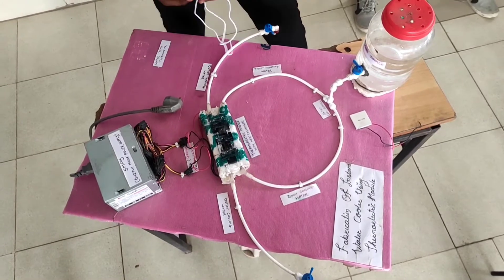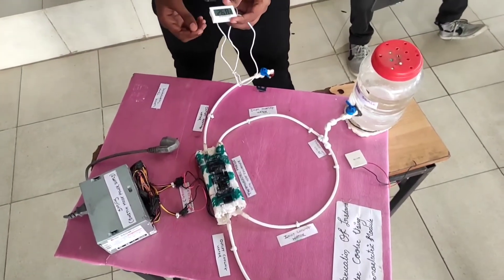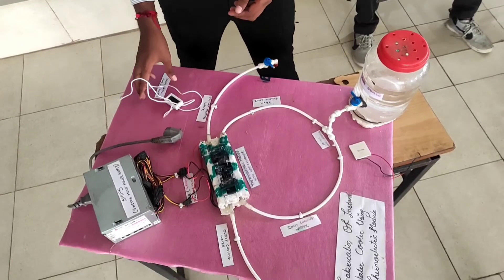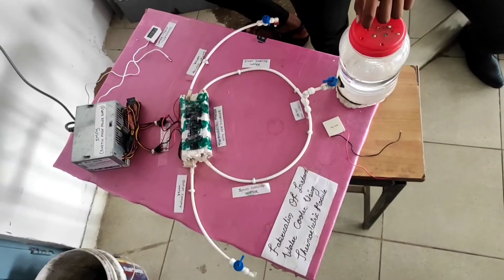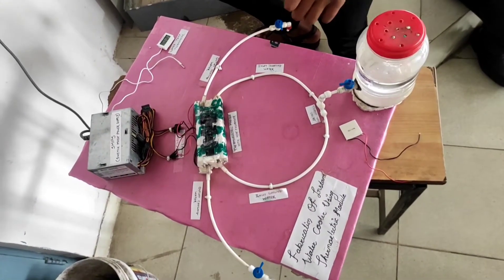And this is the digital water thermometer to check the temperature of cold water and hot water. First we fill the water tank with water. Then we attach the power of SMPS to the electric board.